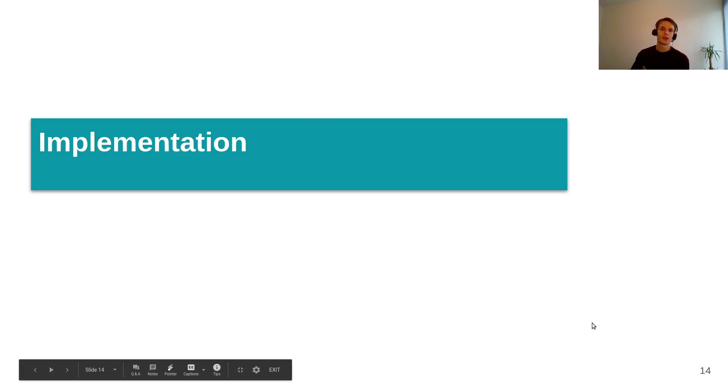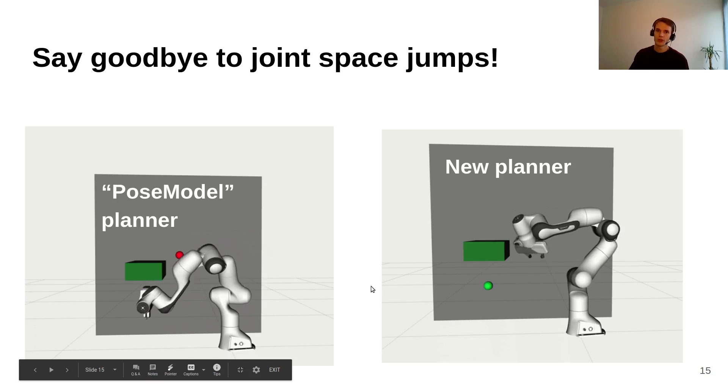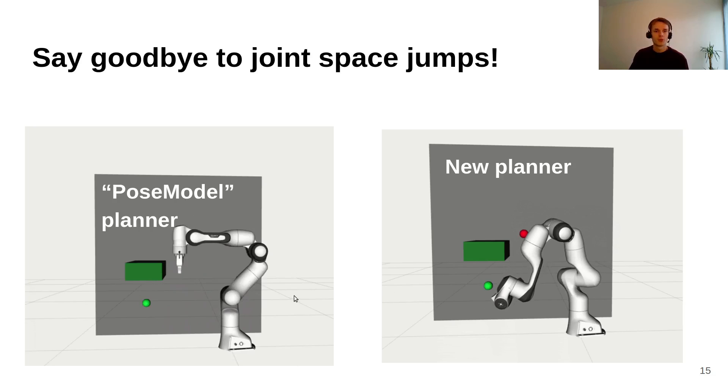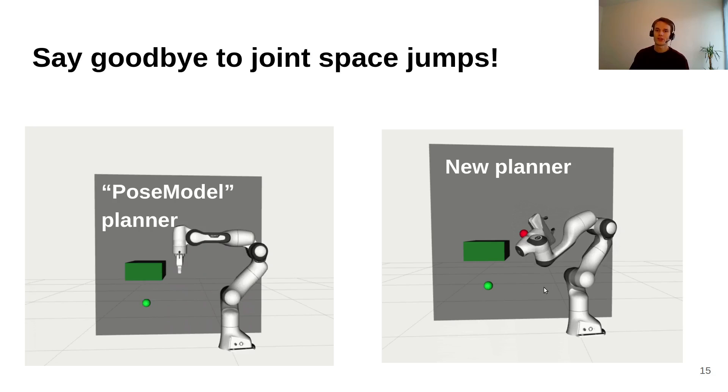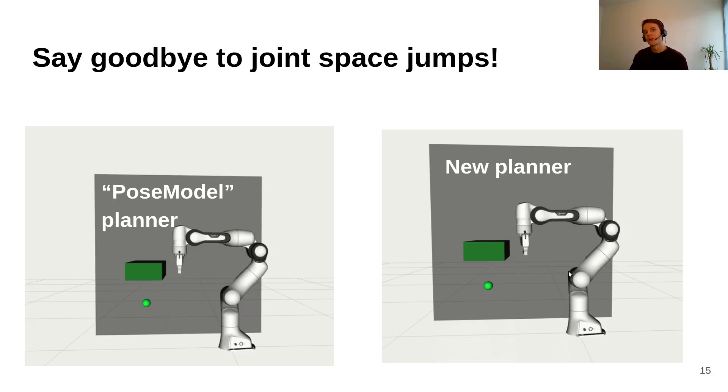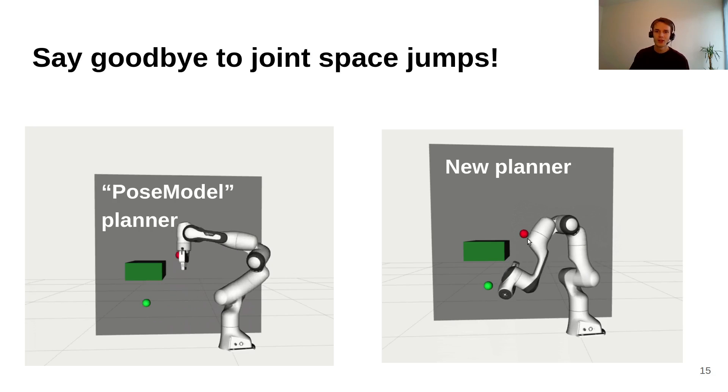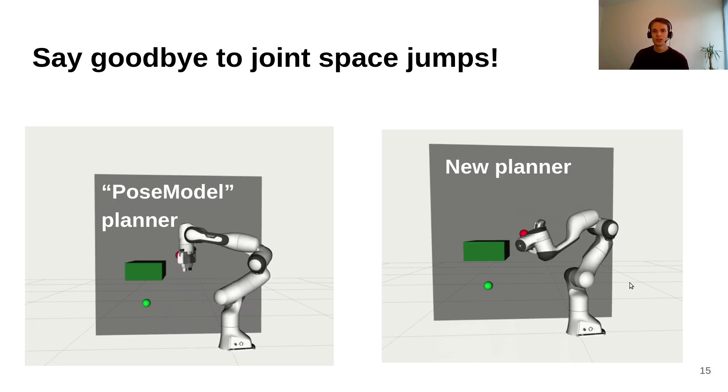And then the implementation. I added this to the MoveIt OMPL interface and then we can use the new planner. Here is an example of an old problem that was problematic and then the new planner. We see that this is a continuous path that we can execute on the robot. Although one could argue that the end effector motion is a bit less ideal, but there were no constraints on orientation, so it's normal.